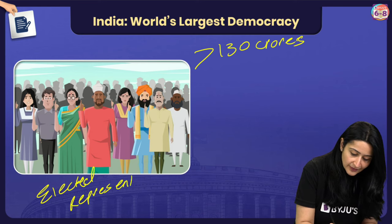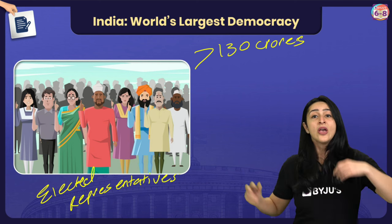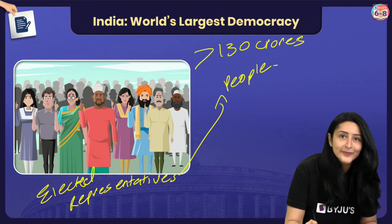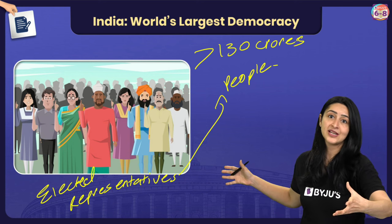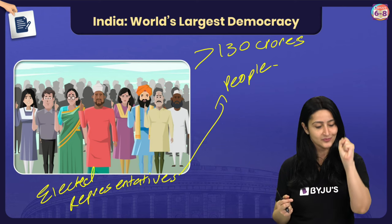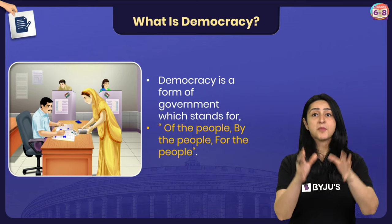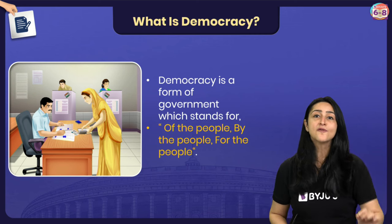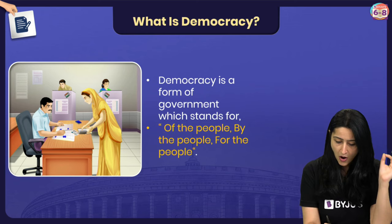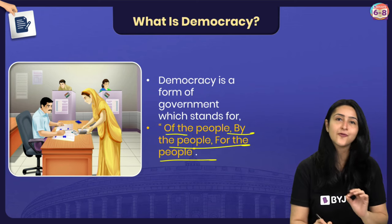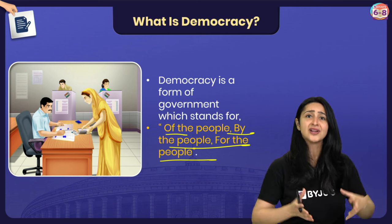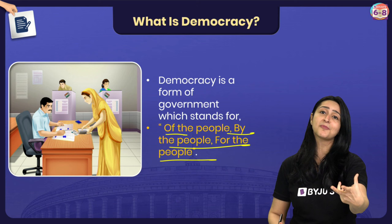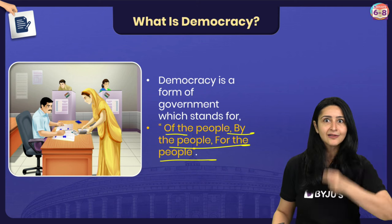These elected representatives are elected by the people themselves, and they make decisions on behalf of the people. A democracy is a form of government that stands for of the people, by the people, and for the people. This means that we ourselves choose our representatives, and these representatives make decisions on behalf of us and for us.